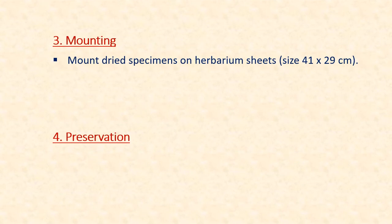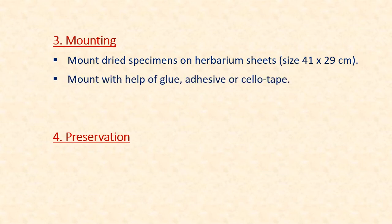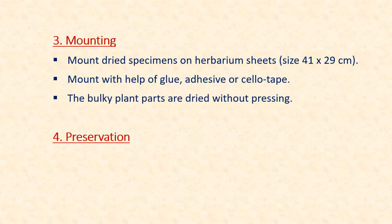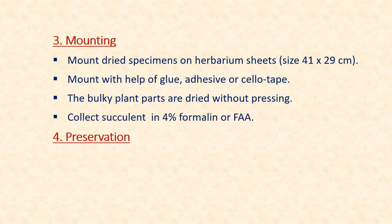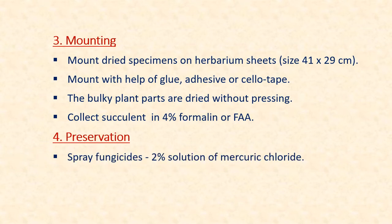The third step is mounting. The dried specimens are mounted on a herbarium sheet of a standard size, using glue or cello tape. Bulky plant parts like dry fruits, seeds, etc., are dried without pressing and are put in a small envelope called fragment packets. Succulent plants are not mounted on a herbarium sheet but are collected in 4% formalin or formalin-acetic acid alcohol. The mounted specimens are then sprayed with fungicides like a 2% solution of mercuric chloride for preservation.